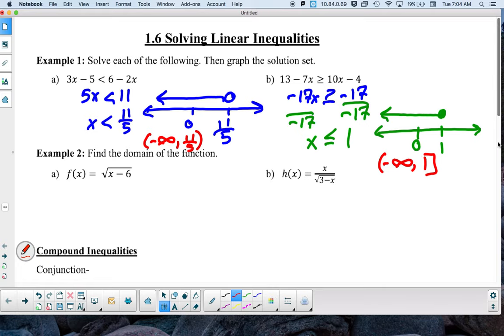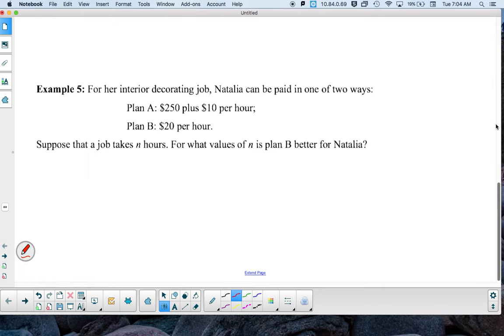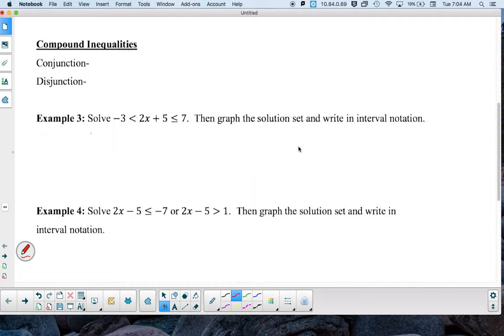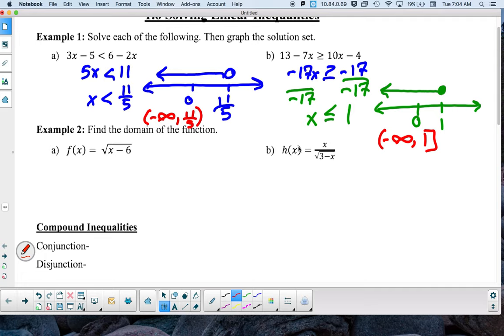And so this will come more in place whenever we're talking about our domain. So then if we look at example 2a, we know that we can't have a 0, or we can't have anything negative under our square root, which means that x minus 6 has to be greater than or equal to 0.